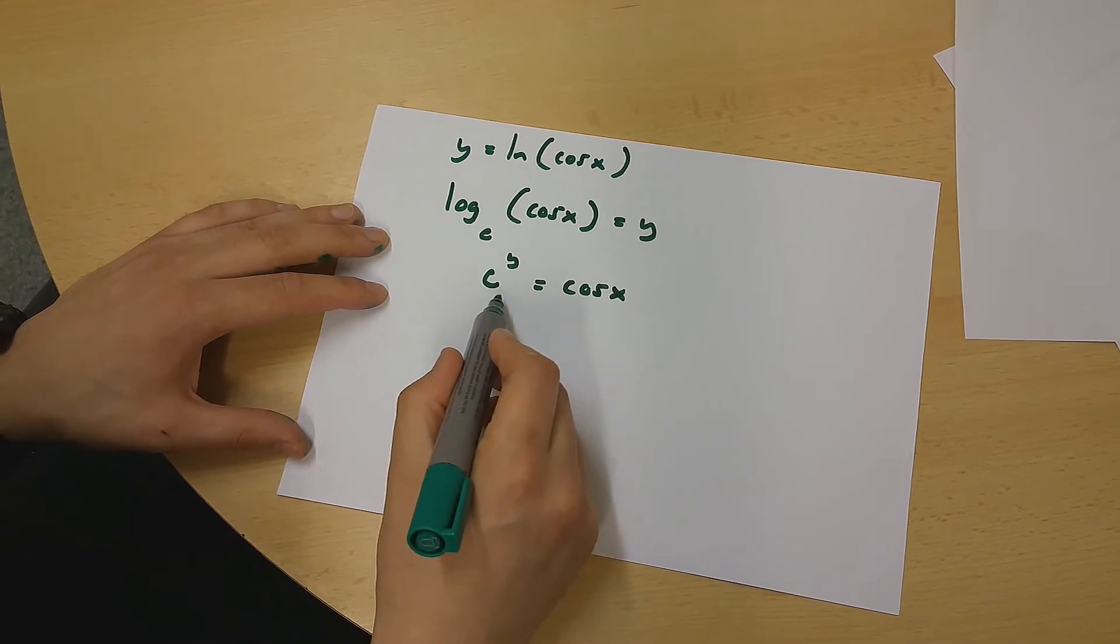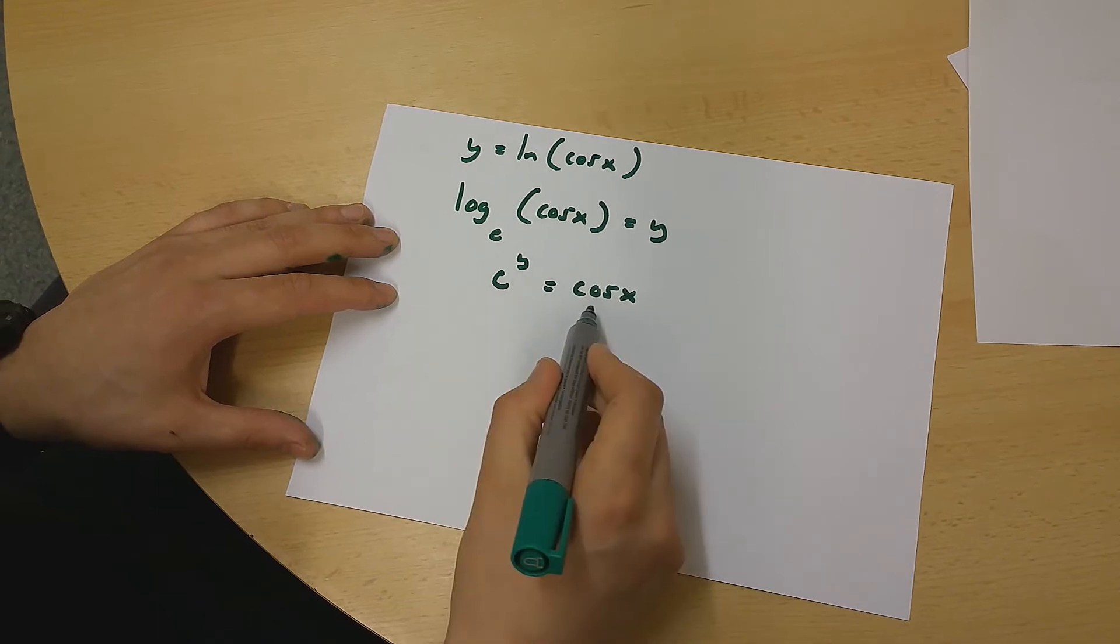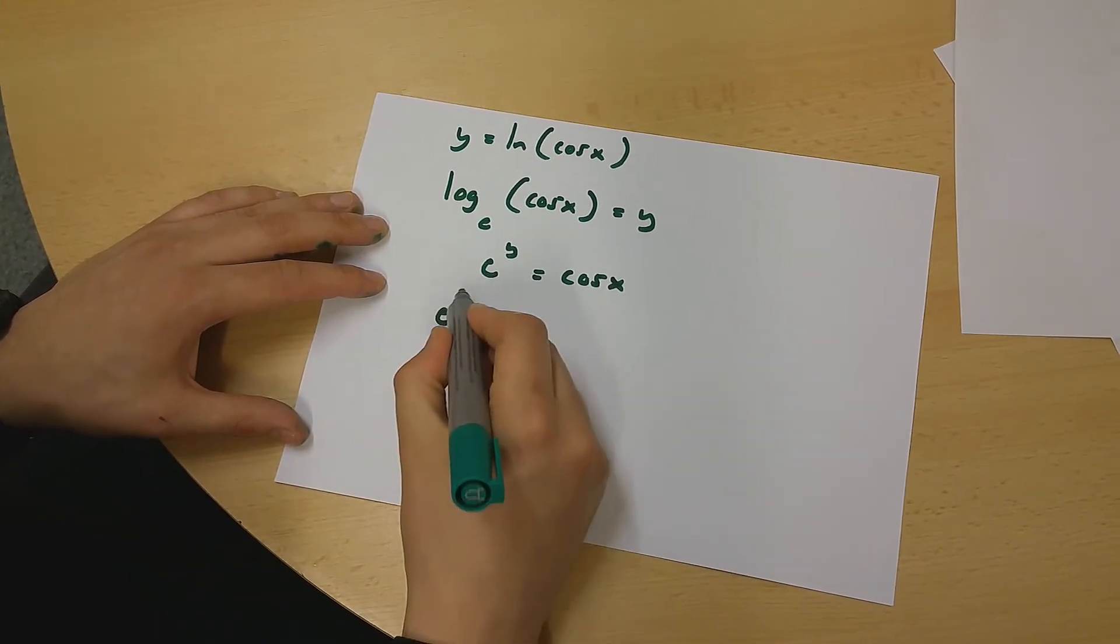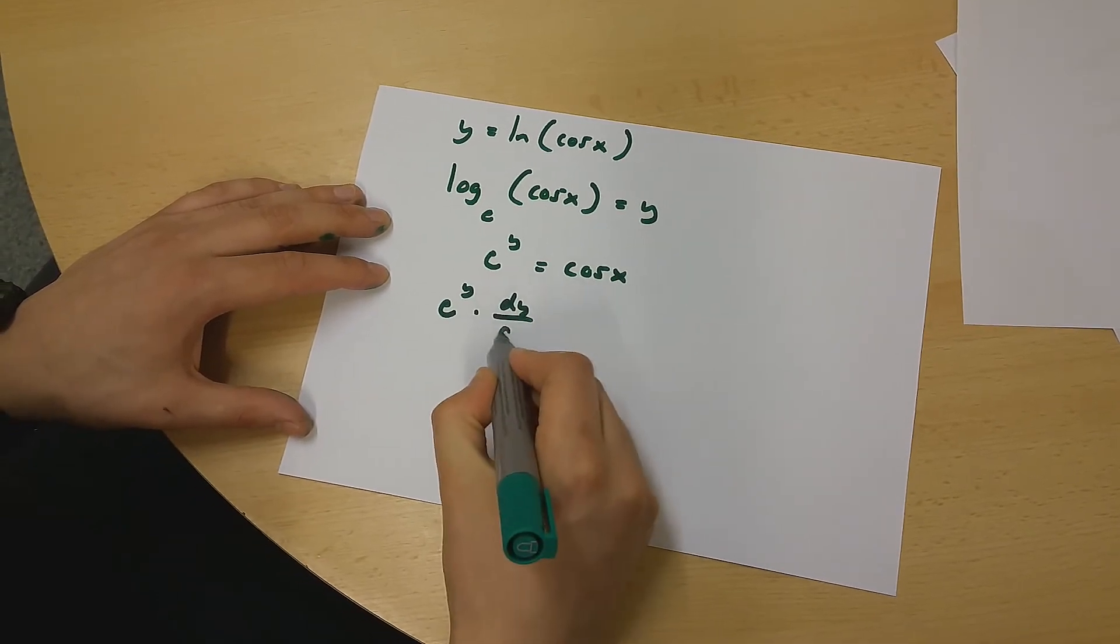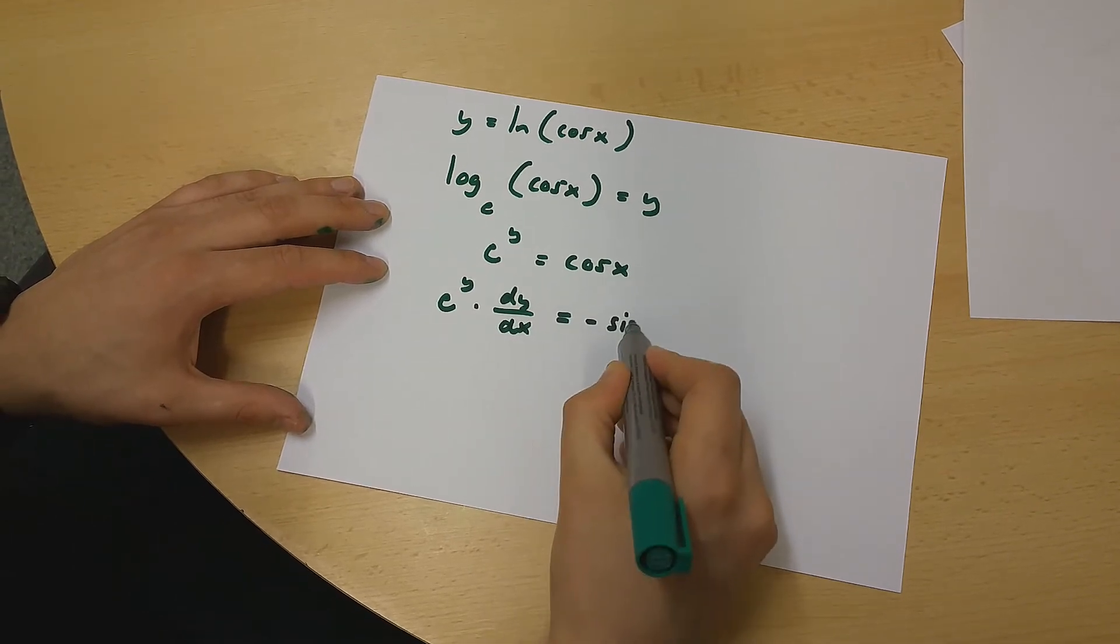Now, let's use implicit differentiation to differentiate this equation over here. If we do this, we're going to get e to the power of y times dy over dx is equal to minus sin x.